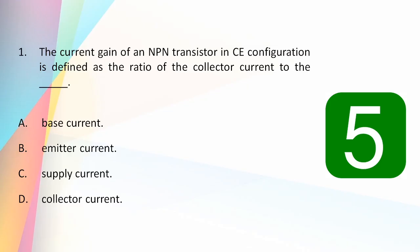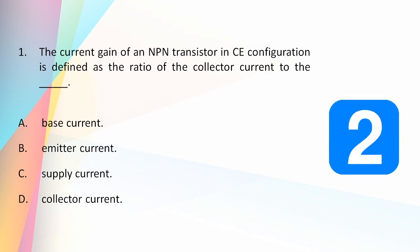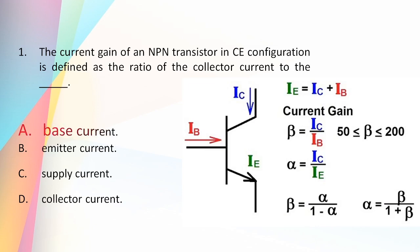The current gain of an NPN transistor in CE configuration is defined as the ratio of collector current to: the base current, emitter current, supply current, or collector current? The answer is base current.